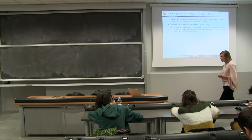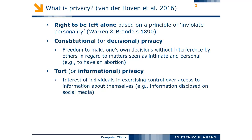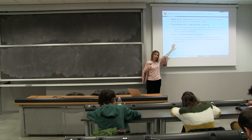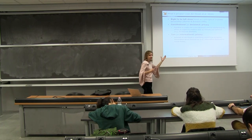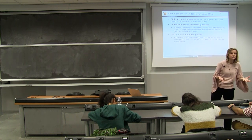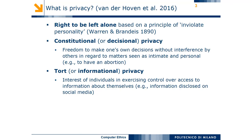There's also another meaning, partly different from constitutional privacy: the idea of tort or informational privacy. We will focus more on this in this lecture. Tort or informational privacy is the idea that people have the right to control personal information — information that is related to themselves. A very simple example is personal information disclosed on social media.